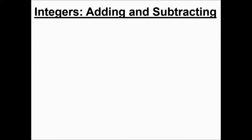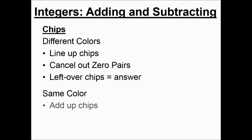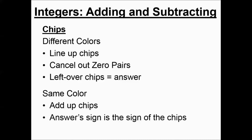Now we're going to talk about chips — a different way to represent the integers. If your chips are different colors, you're going to line them up and cancel out zero pairs. Leftover chips is the answer. When you have the same colors, you just add up your chips and the answer sign is the sign of the chips. You can screenshot this or write down notes and keep coming back to it.